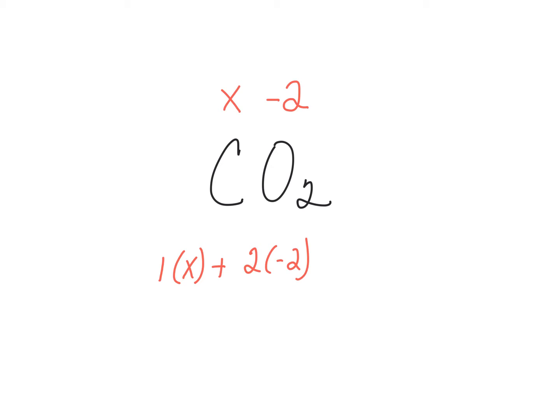Now we can say this is equal to zero, so X minus 4 equals zero, and X equals 4. So the oxidation number of carbon in carbon dioxide is plus 4.